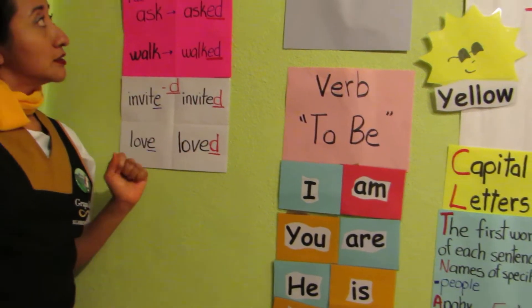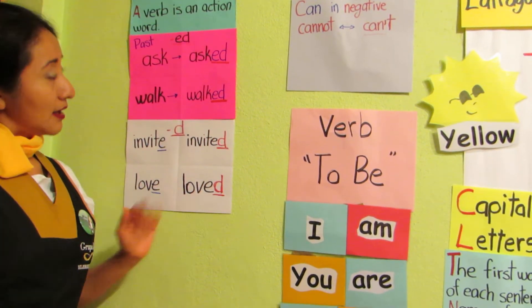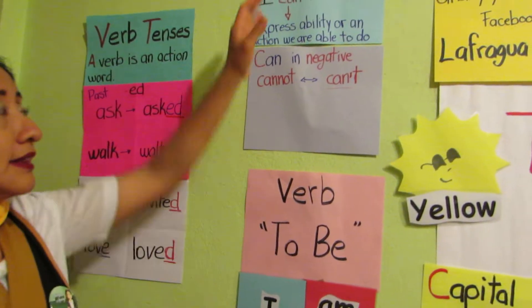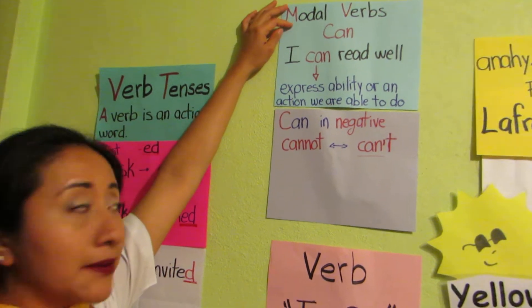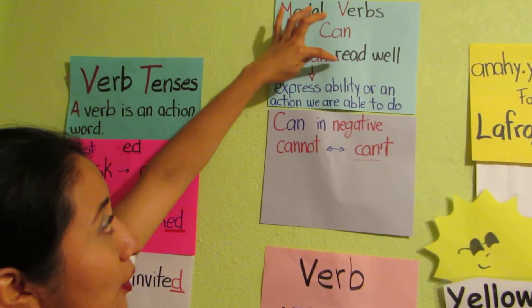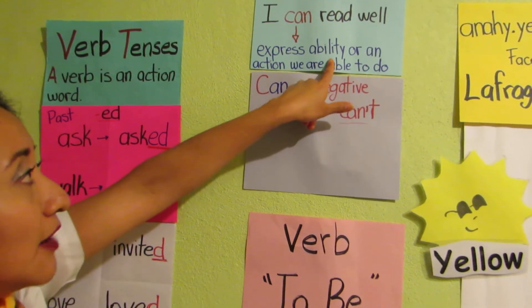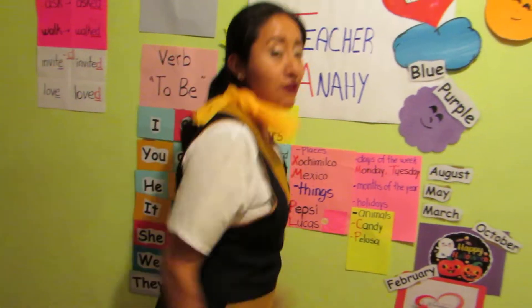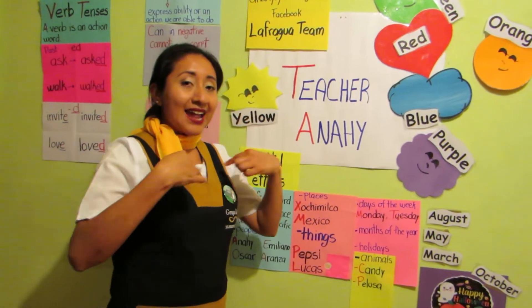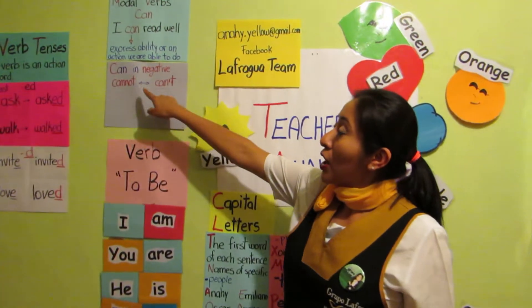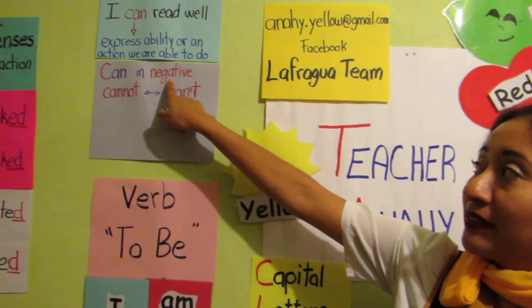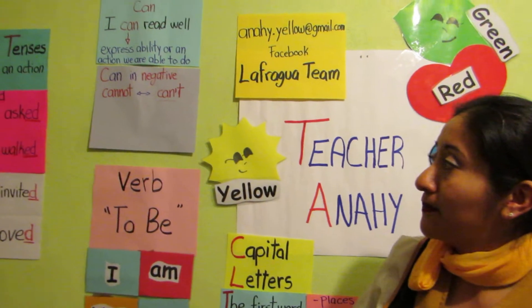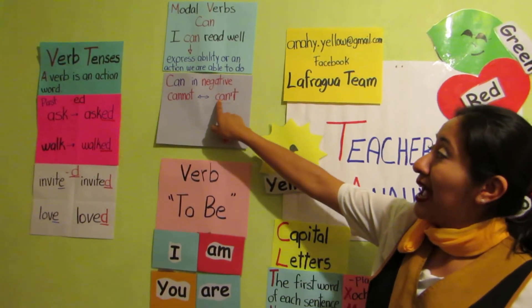If you have some questions, no problem. We can study this topic when we're back to school. The other topic was modal verb 'can.' Can expresses ability or an action we're able to do. For example, 'I can read well,' 'I can run fast.' But it's different when 'can' is negative: 'cannot' or the contraction 'can't.'